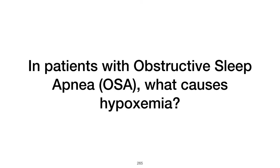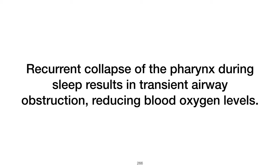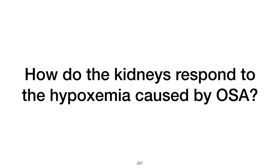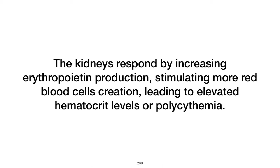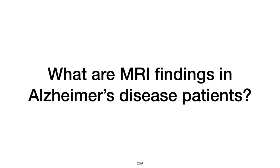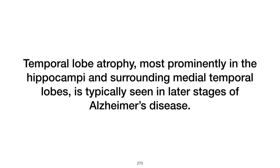What causes hypoxemia in patients with obstructive sleep apnea (OSA)? In patients with OSA, recurrent collapse of the pharynx during sleep causes transient airway obstruction, leading to short periods of apnea or hypopnea, which reduce blood oxygen levels. The kidneys respond by increasing erythropoietin production, leading to elevated hematocrit levels (polycythemia). In Alzheimer's disease, MRI findings typically include temporal lobe atrophy, most prominently in the hippocampi and surrounding medial temporal lobes, usually seen in later stages.